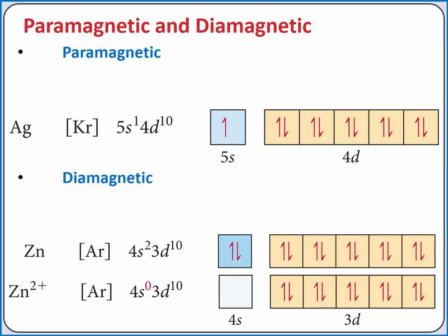So zinc is diamagnetic. When we create an electron configuration for zinc 2+, it's important that we remove the electrons first from the orbitals with the highest principal quantum number, which is from the 4s subshell. After removing these electrons, the electron configuration is argon 3d10. All of the electrons in zinc 2+ are still paired, so zinc 2+ is also diamagnetic.